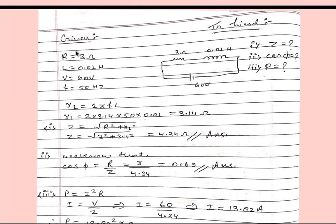Again we will write given and what we have to find. I have drawn a simple sketch here: 3 ohm is connected in series with 0.01 henry and connected across potential difference of 60 volt. So what is given in the question is R equals 3 ohm, L equals 0.01 henry, voltage equals 60 volt, frequency is 50 hertz. And we have to find Z impedance, power factor cos φ, and power absorbed P.